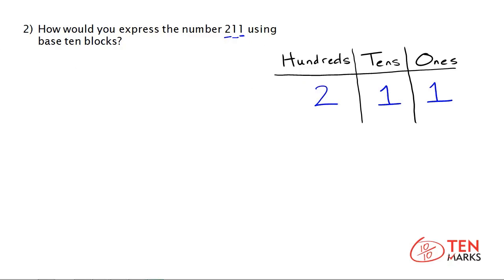So, now we can write out the number of flats, rods, and cubes we need. The hundreds are represented by flats, and you have the digit two here, which means you will have two flats when you go to write this number in blocks.